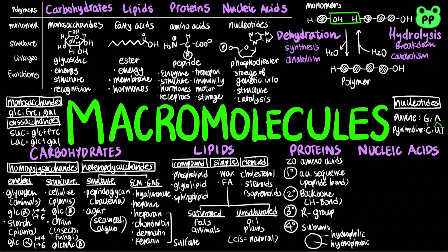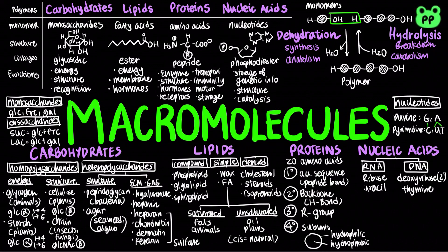There are two main types of nucleic acids: RNA, or ribonucleic acid, and DNA, or deoxyribonucleic acid. They differ at the two-prime position of the sugar. The nucleotide uracil is found in RNA, whereas thymine is found in DNA. RNAs also tend to be single-stranded, whereas DNAs tend to be double-stranded.